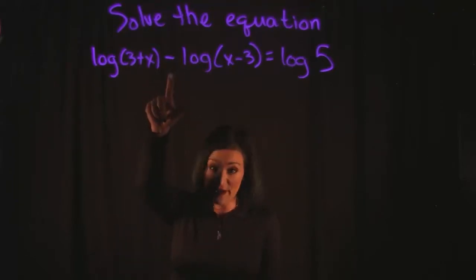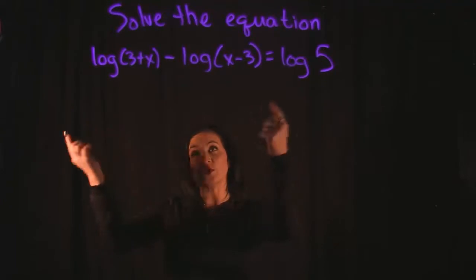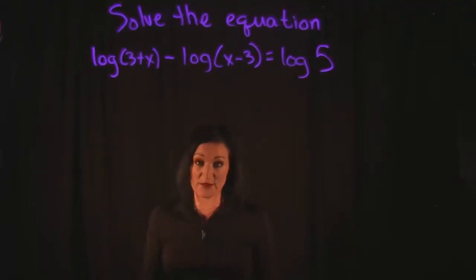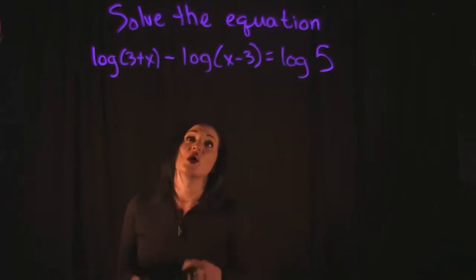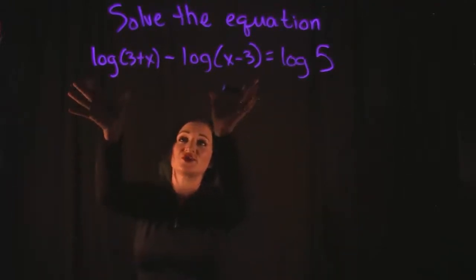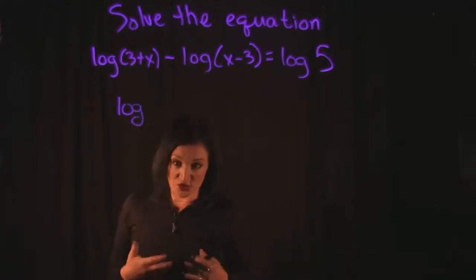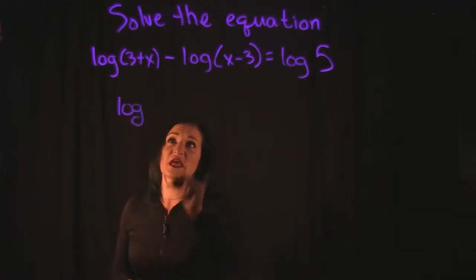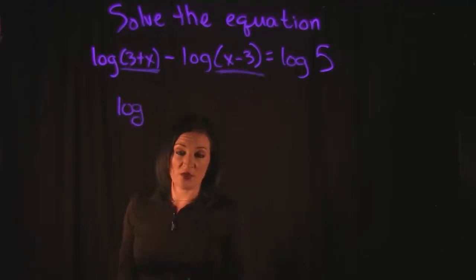The way that I can do that is by paying attention to this minus sign here. When it comes to logs, a minus sign translates to the quotient rule. The quotient rule says that when you are subtracting two logs together of the same base, you can combine them by doing a division. We're going to combine these two into one. I'm going to keep the log, if there's not a base there it's understood to be 10, so this is log base 10. I'm going to take the first one divided by the second one.